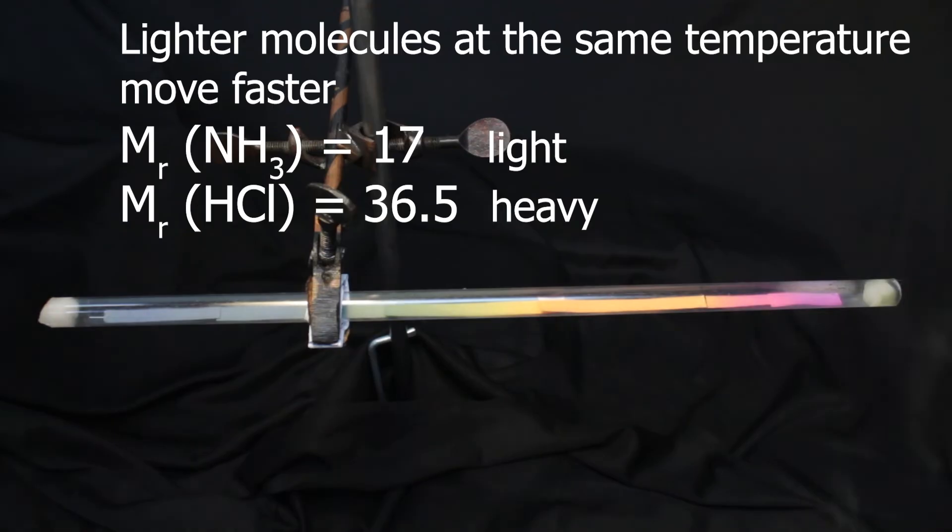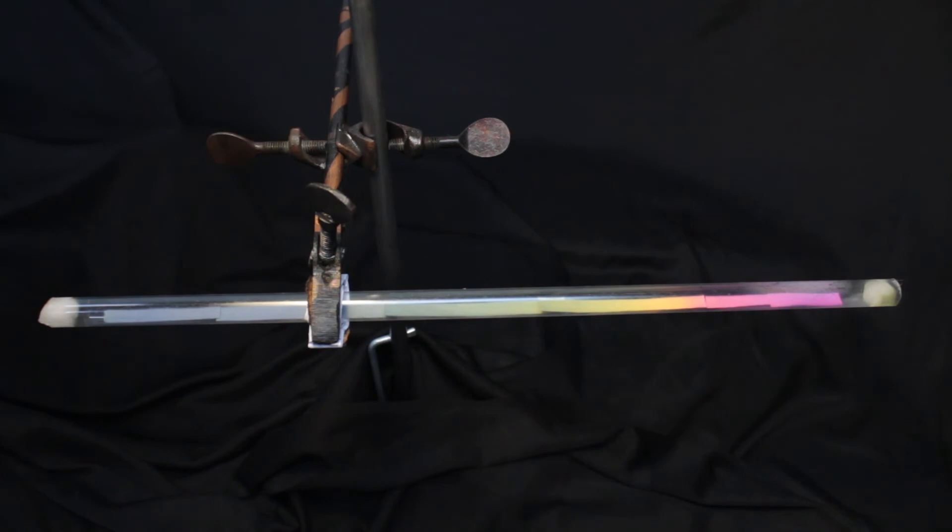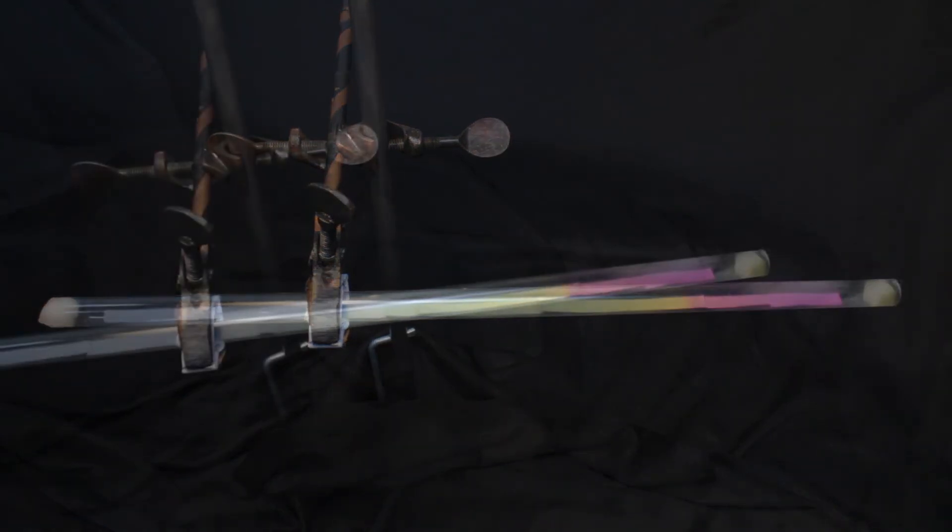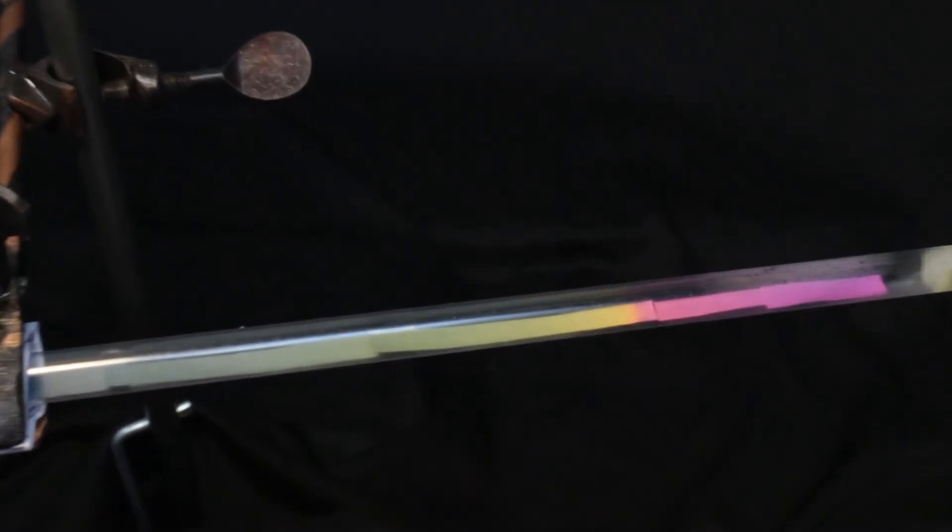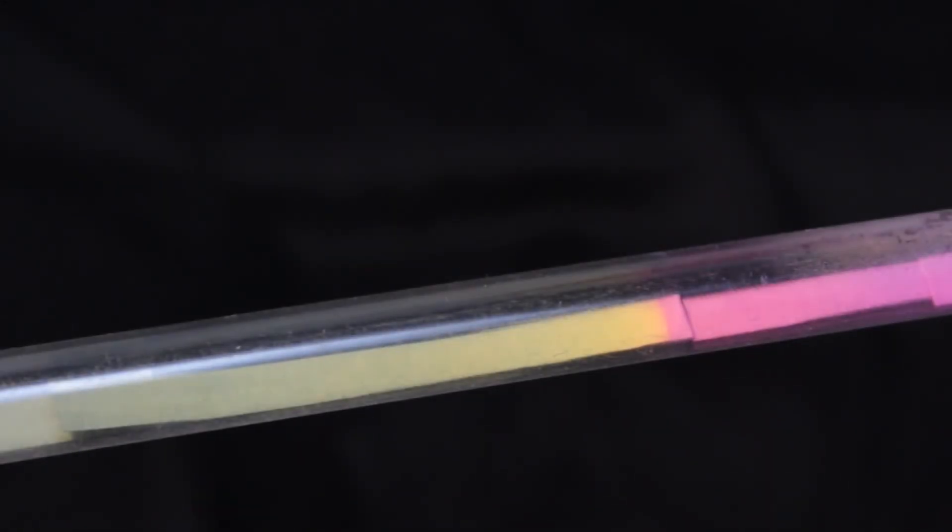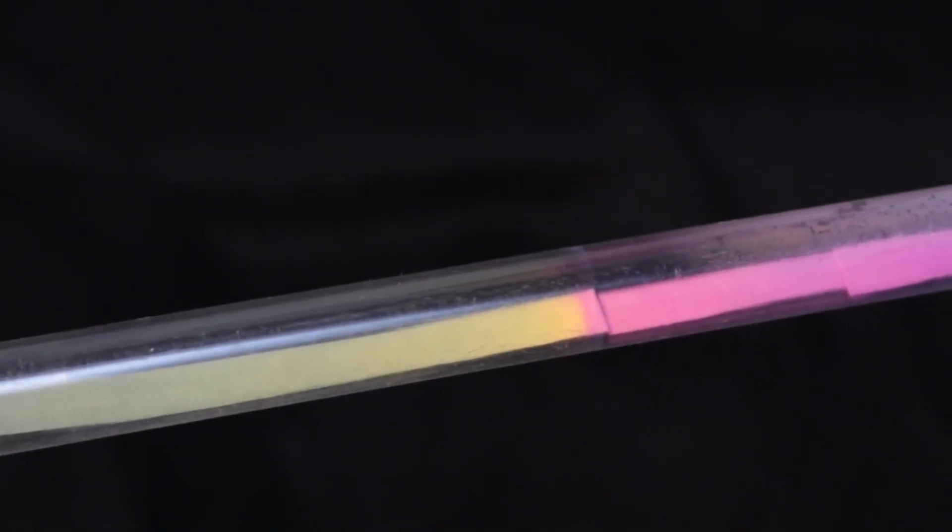The idea is lighter molecules would move faster. As you can see already, ammonia has reached well beyond the middle of the tube, and hydrogen chloride is lagging behind. Soon they are going to meet, and we will look at the place where this is going to happen.